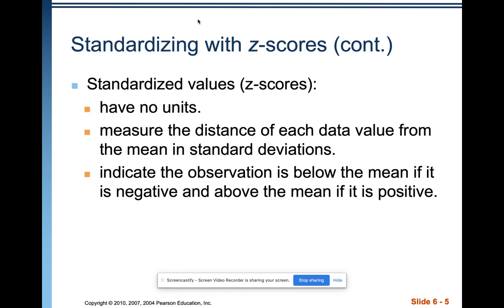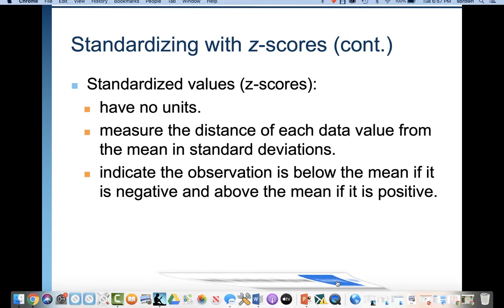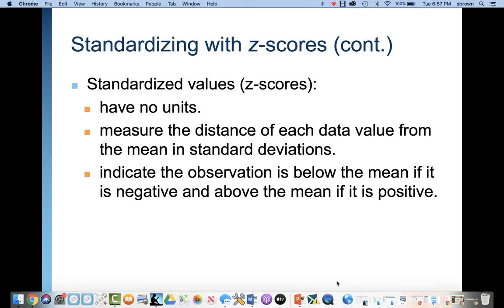The z-score measures the distance and the direction of each data value above or below the mean. If it's a positive z-score, it's above the mean. If it's a negative z-score, it's below the mean — which makes it pretty easy to interpret.